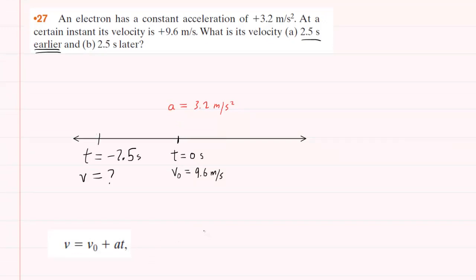We're simply going to take the initial velocity, which again was the positive 9.6 meters per second, and then add the acceleration of 3.2 meters per second squared, multiplied by our time of negative two and a half seconds.